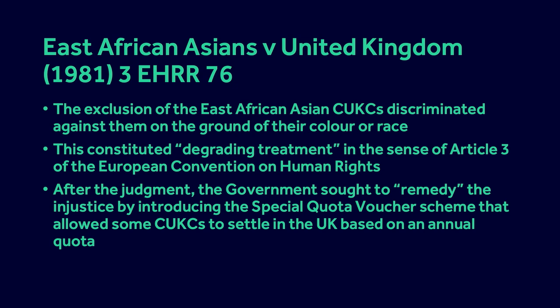That is not just my opinion. In 1973, the European Commission on Human Rights found not only that the 1968 Act was racially discriminatory, but also that it violated Article 3 of the European Convention on Human Rights, in that it constituted degrading treatment. The government supposedly remedied this injustice by creating the Special Quota Voucher Scheme, which allowed some CUKCs to settle in the UK based on an annual quota.